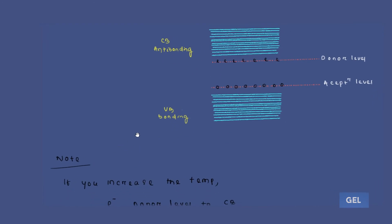This has quite interesting properties. At the donor energy level there will be availability of electrons, and holes will also be available at the acceptor level. Now, these free electrons and free holes are available on the donor energy level or in the acceptor energy level only at 0K.